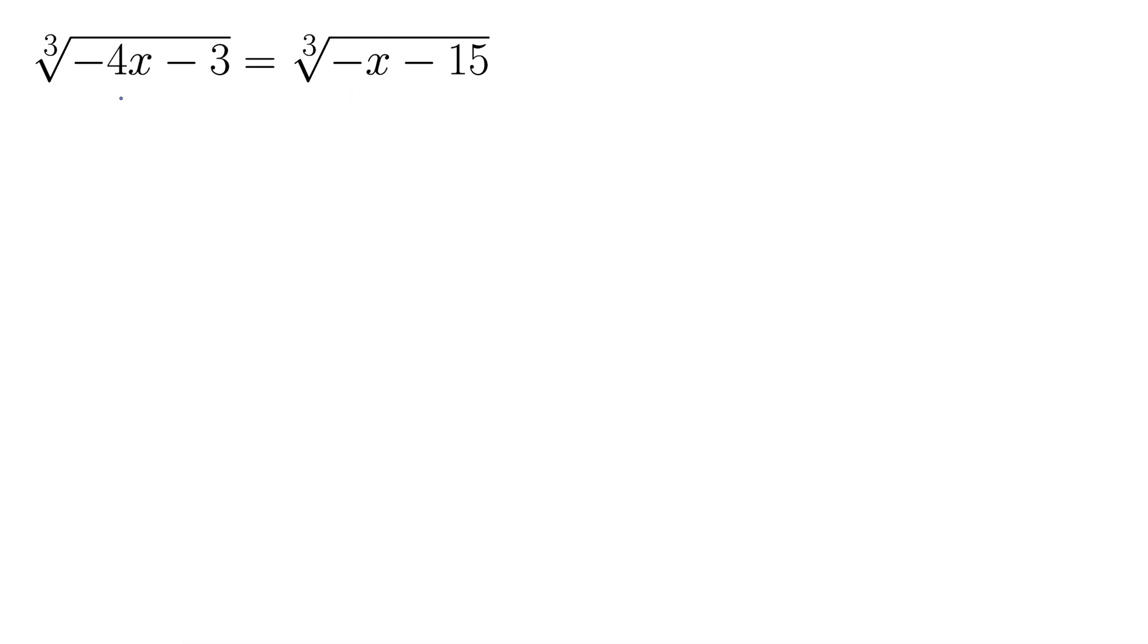Now, we're kind of in luck here because it's just one cubed root equals another. If we had something like plus 5 or something out here to the side, we'd be in a whole different world. Right now, it's just one cubed root equals another, so we simply take each side and cube it.